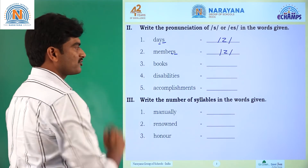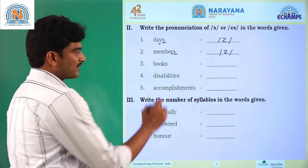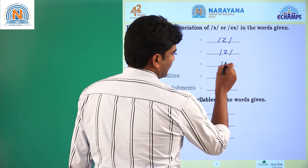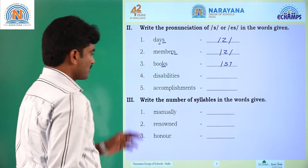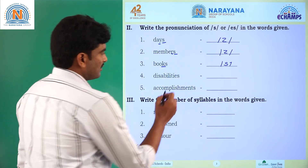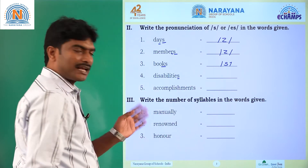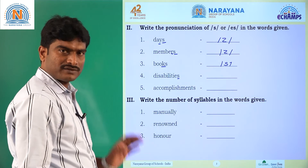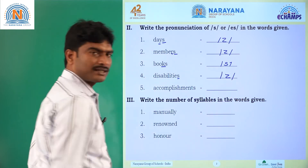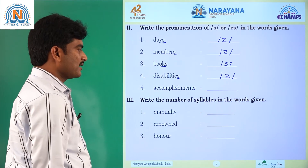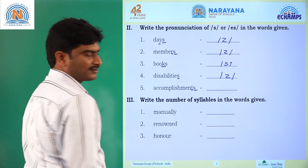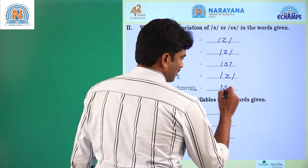Members. Question number 3: books. Here S is added to the K letter and the sound is S sound. Question number 4: disabilities. Here S is added to the disability and the sound is a vowel sound, so the answer is Z sound. Disabilities. Question number 5: accomplishments. Here S is added to the T letter and the sound is S sound.